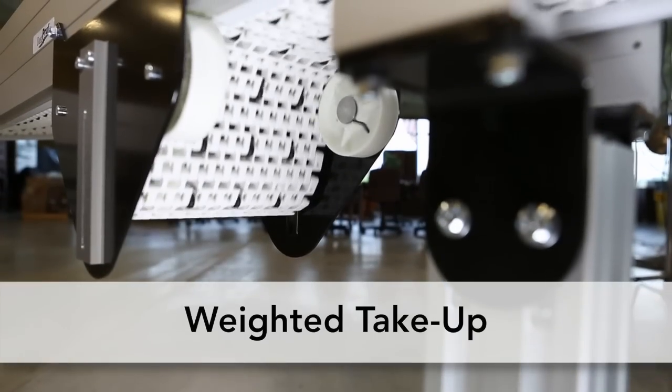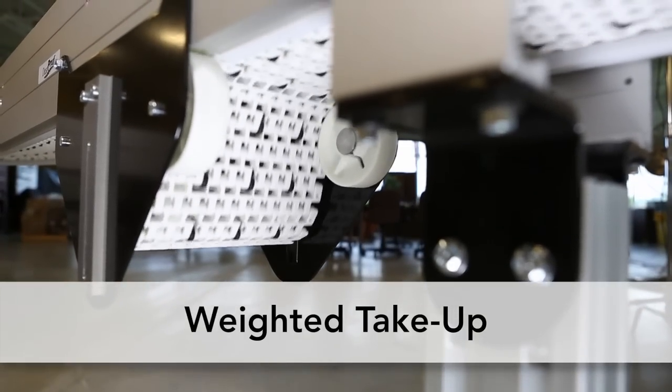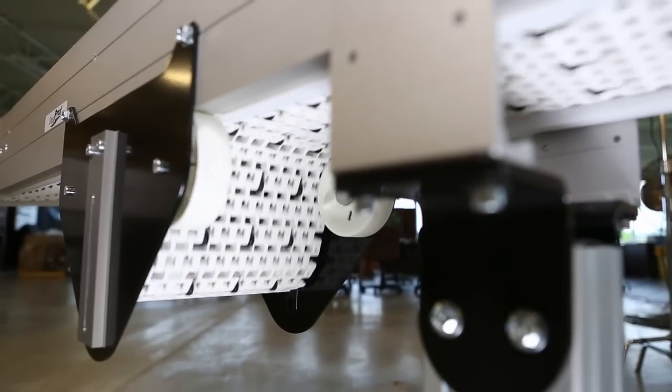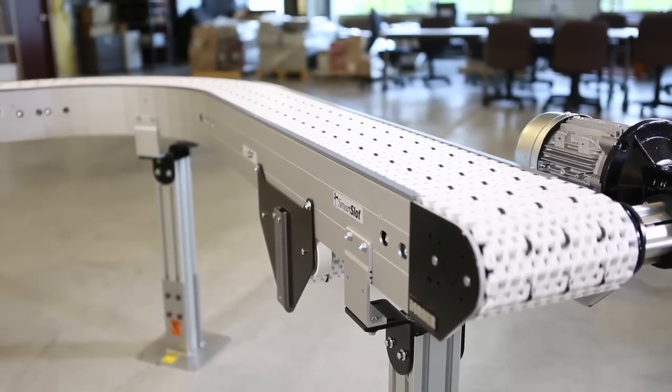The Compact Weighted Take-Up is standard on all curved conveyors and conveyors with nose bar transfers. It's designed to prevent catenary sag, eliminate potential pinch points for safety, and free up the end of the conveyor.